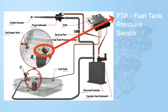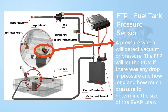The next component is the FTP, or fuel tank pressure sensor. This is a MAP sensor-type sensor which will detect either vacuum or pressure depending on which type of system you're looking at. The FTP is going to let the computer know if there's any drop in pressure over a set amount of time — this is how the computer determines if it has a leak or not. Depending on how much pressure drops over time, that's how it determines if it's a small leak, very small leak, or a large leak.